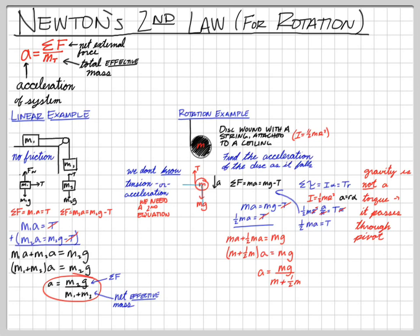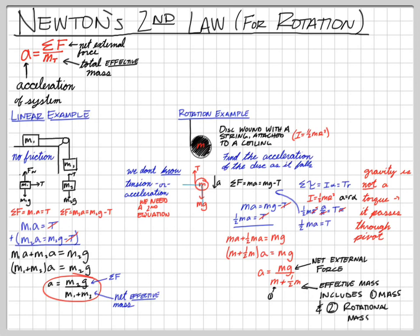M is the mass of the object, and one-half M is the contribution to the effective mass from the rotational inertia. We've given this system a little more inertia by causing it to rotate. MG is our net external force, and on the bottom we have the effective mass — the regular mass plus the rotational contribution. The rotational inertia was one-half MR squared; the effective rotational mass is just one-half M — the R squared drops off.